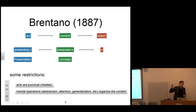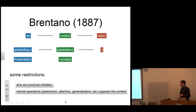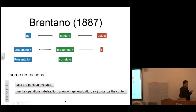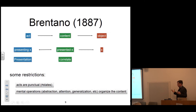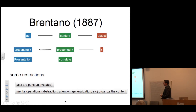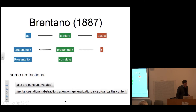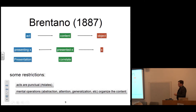Brentano also has some restrictions in his theory. For Brentano, there are no mental states with temporal extension — acts in his view are punctual. This is a problem when it comes to explaining the unity of consciousness over time. If you perceive a melody but you only have a now-point as your consciousness of the melody, how can you reconstruct the whole melody in your mind? This is a problem Brentano has a nice solution for, which Husserl will take over some years later. So Brentano has these punctual acts, and with them mental operations like abstraction, attention, and generalization, which actually organize the content.